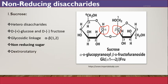Sucrose is dextrorotatory — it rotates plane polarized light to the right. But after hydrolysis, it gives one molecule of glucose, which is dextrorotatory, and one molecule of fructose, which is levorotatory. Since the levorotation of fructose is minus 92.4 degrees, which is greater in magnitude than the dextrorotation of glucose at plus 52.5 degrees, the mixture becomes levorotatory after hydrolysis. This change from dextrorotatory to levorotatory means the product is called invert sugar.